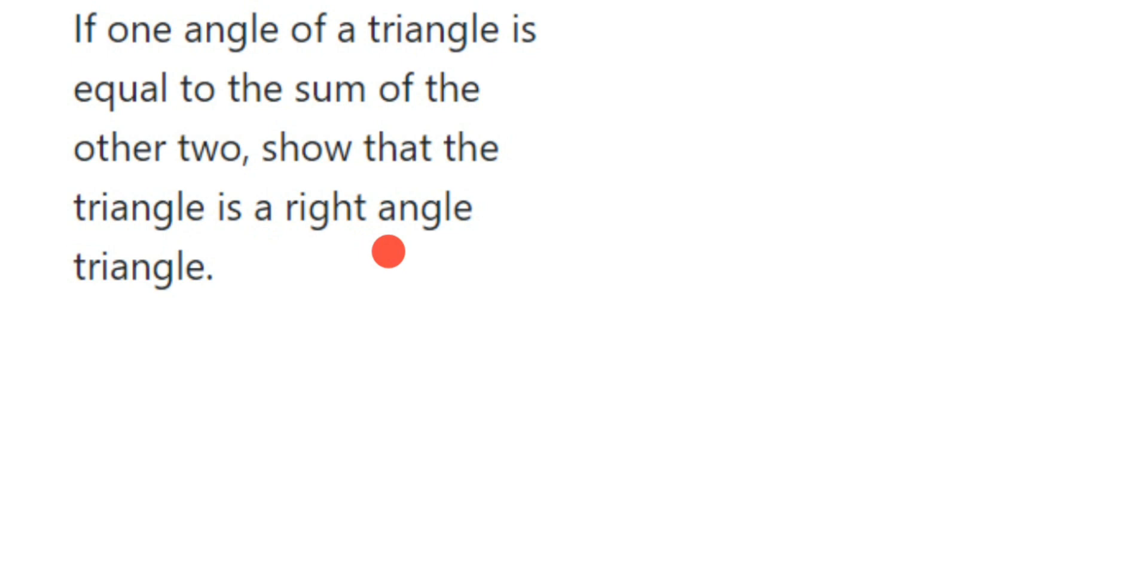This type of question can come where they have not given any value but still we have to prove the triangle is a right angle triangle. How to do this? Now since we don't know the angles, let us assume the angles.